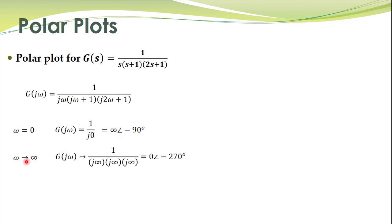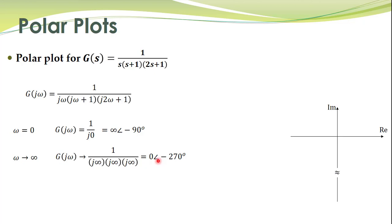Another convenient point is omega approaching infinity. In that case, 1 over j omega gives j infinity, the second term another j infinity, and the third j infinity as well. The magnitude is 1 over infinity, which is 0, and the phase angle is minus 270 degrees. So we have zero angle minus 270 degrees.